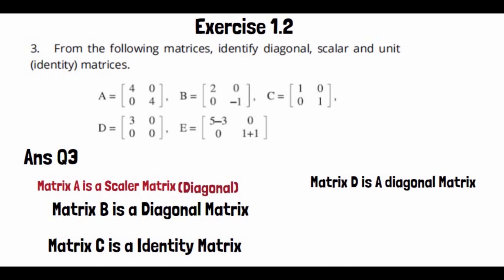We always consider the principal diagonal, also called the leading diagonal. Matrix E, when fully solved — 5 minus 3 gives 2, and 1 plus 1 gives 2 — has the same diagonal entries. A matrix with the same diagonal entries is called a scalar matrix, and a scalar matrix is always a diagonal matrix too.